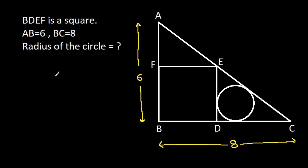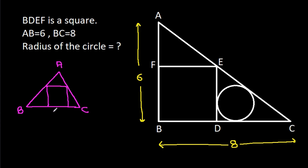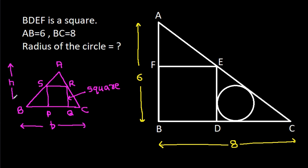So, in any triangle ABC, if PQRS is a square, and if the base of the triangle is B, the height of the triangle is H, and the side length of the square is A, then A will be equal to B times H divided by B plus H.